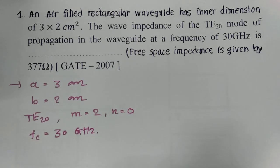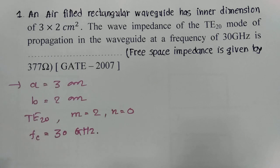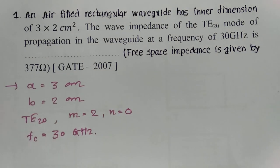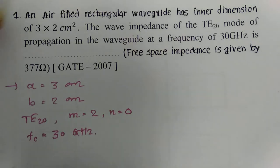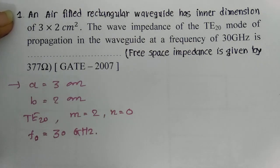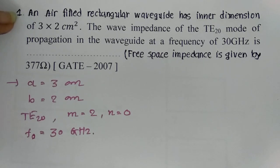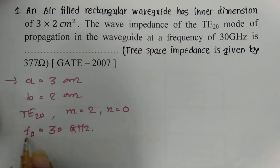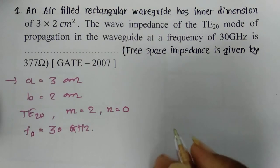In this session, we are required to identify the wave impedance. The operating frequency is given as 30 GHz, so we need to calculate the cutoff frequency. Once we calculate the cutoff frequency, we can find the wave impedance.